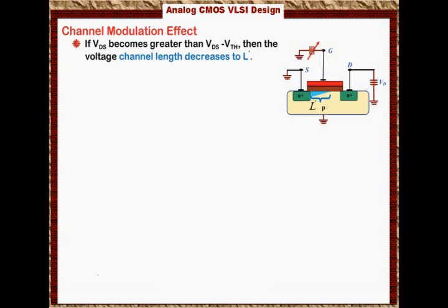The channel length is affected by VDS. If you increase VDS, channel length decreases. Where L prime is less than L, this condition is always true, because by increasing VDS, the channel length will be less than the actual effective length of the channel.